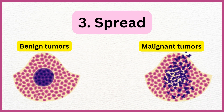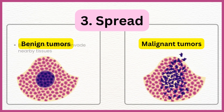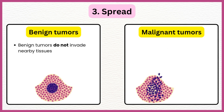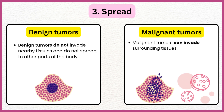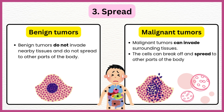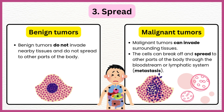Spread of Tumors: Benign tumors do not invade nearby tissues and do not spread to other parts of the body. Malignant tumors can invade surrounding tissues; the cells can break off and spread to other parts of the body through the bloodstream or lymphatic system. This phenomenon is called metastasis.